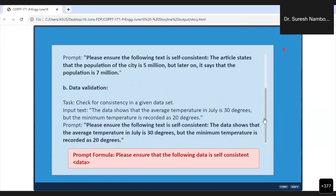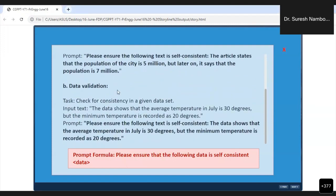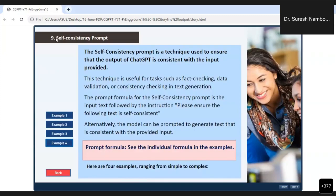The second important thing is data validation. We are giving a first document with data, then a second document with data, and we're telling ChatGPT to do data validation. Now we have completed this self-consistency prompt.